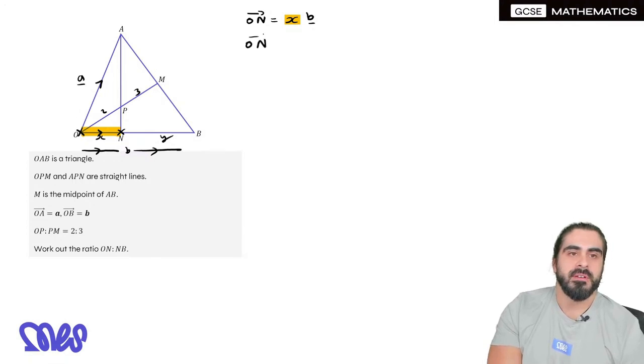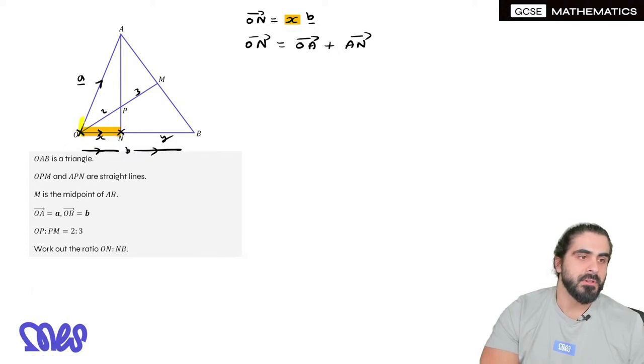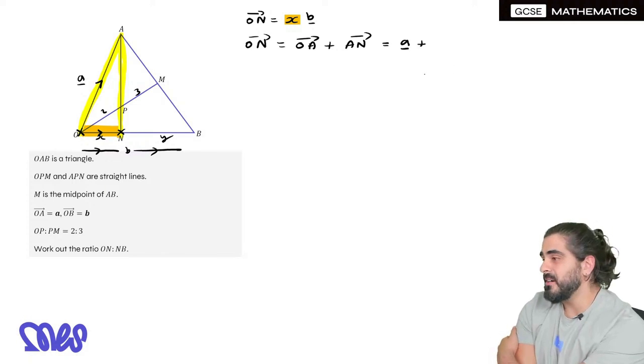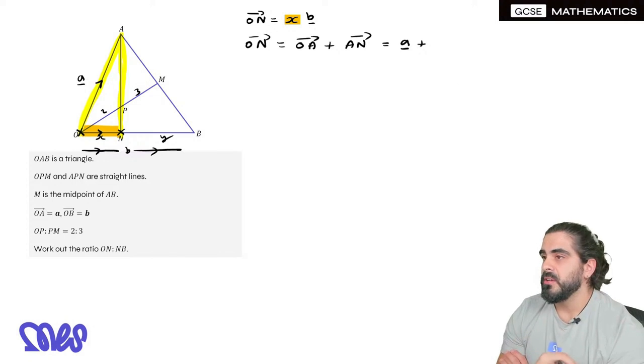So to go from O to N, I'm going to go O to A, and then A to N. So I'm going to go up and then down. O to A and then down to AN. So that's A plus. Now, here is where it becomes, this is the point where 99% of students had no idea what to do.